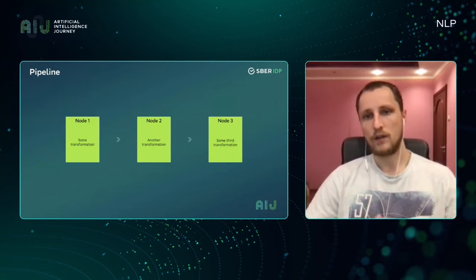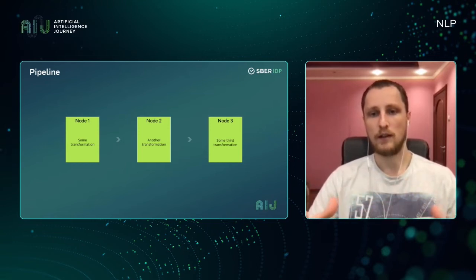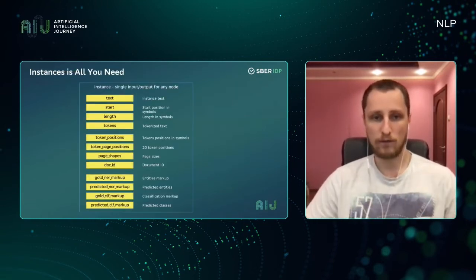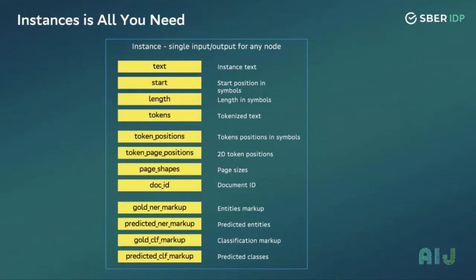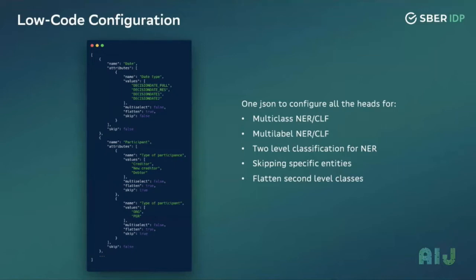One box is not enough for NER classification work — we put several boxes together to make a pipeline, defining how they interact and what data formats to use. We created a single format for all boxes: tokenized text with additional information for models that use 2D token coordinates on the document page. Here's an example of code: initialization of the pipeline, training, and prediction — not much code. Configuration is done through one JSON file.